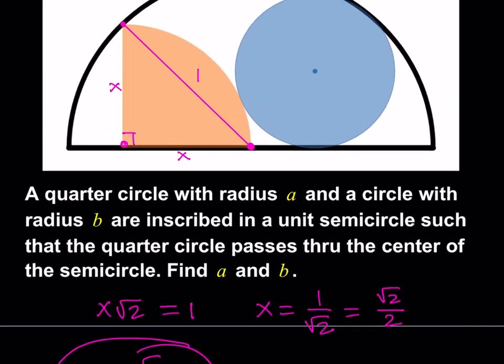We found the radius of the quarter circle. Now we're going to find the radius of the blue circle, which is b. For that purpose, we're going to make more connections. If you connect the centers, you know that connecting the centers of tangent circles almost always helps. Let's go ahead and make this connection here.